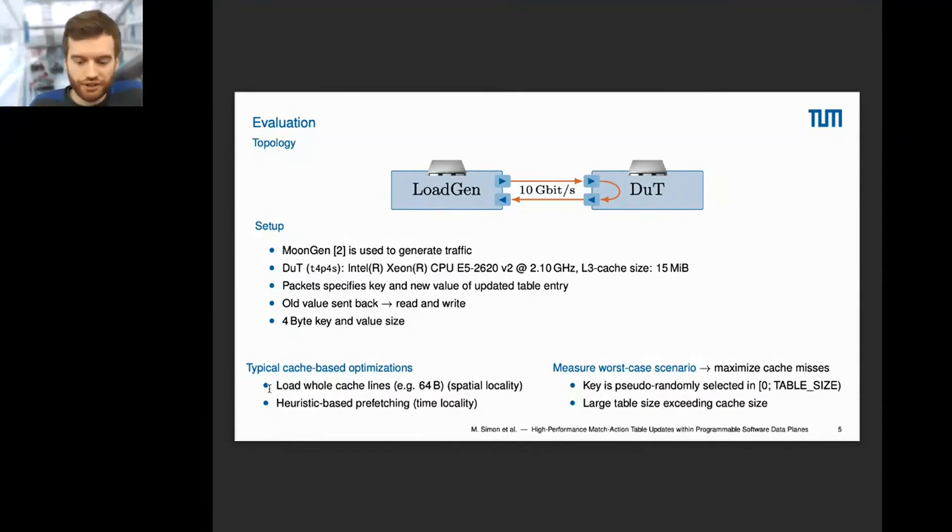We wanted to measure the worst-case scenario, so we have to think about optimizations which could be done by the cache. The cache has the advantage of being accessed faster than main memory but has limited capacity. Two major optimizations are performed by caches: loading whole cache lines, so accessing an array iteratively loads more than one entry into cache, and heuristic-based prefetching. We wanted to measure worst case, so we maximize cache misses. Therefore, keys for accessing the table are pseudorandomly selected, and we ensure table size is large enough to exceed cache size.